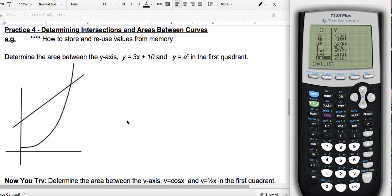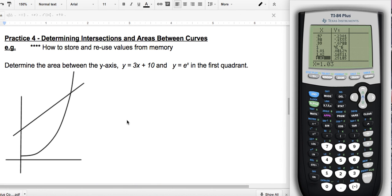Geelong here. We're going to look at practice four, which is looking at intersection points, functions and areas between curves. You'll need this, for example, for volumes of revolution. We're also going to look at how you store and reuse values from memory to make sure you get as many significant digits as possible.